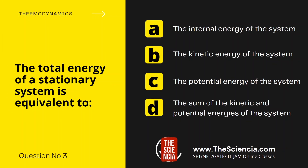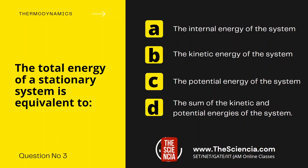The next question is question number 3. The total energy of a stationary system is equivalent to — Option A, the internal energy of the system. Option B, the kinetic energy of the system. Option C, the potential energy of the system. Option D, the sum of the kinetic and potential energies of the system.